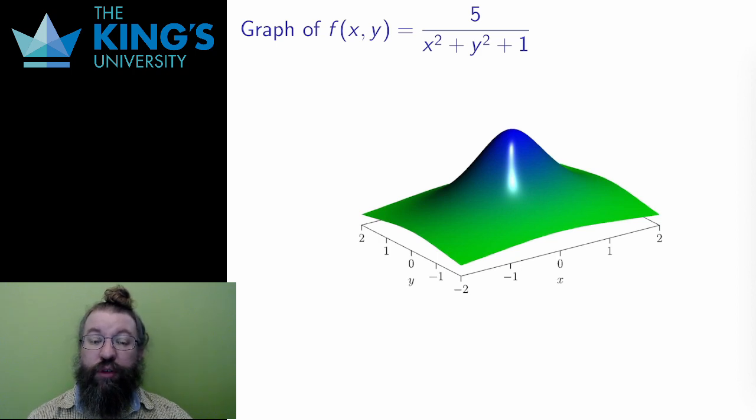The new derivatives that I've defined so far - partials, gradients, directional derivatives - they all work on the first idea of the derivative as a rate of change. The partial is a rate of change in one of the variables. The gradient was the direction that gave the greatest change, and the directional derivative was a rate of change in a specific direction.